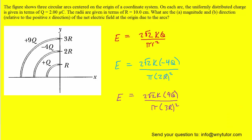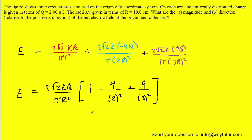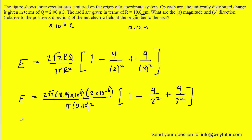So there are the expressions for all three arcs, with charge and radius changed according to each circular arc. The total electric field is the sum of these three individual fields. You could plug in all known values now, or notice that there's a common factor of 2√2·kq over πr² common to all three terms, so let's factor it out. You may want to pause the video to verify that factoring. Now we can plug in the known values for k, q, and r. Note that q is given in microcoulombs, so multiply by 10⁻⁶ to get coulombs, and r must be converted to meters: 0.10 meters. Processing all of that, the result is approximately 1.62 × 10⁶ newtons per coulomb.